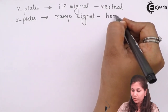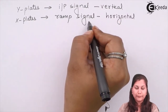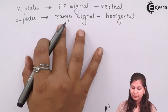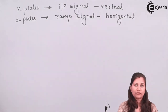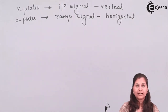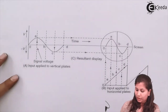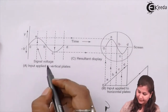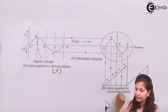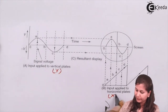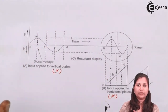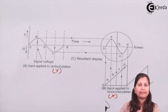Consider an example where the input signal applied to the Y plates is a sinusoidal signal and a ramp signal is applied to the X plates, with the frequencies of these two signals being different from each other. In graph A we are showing the input applied to the vertical plates (Y plates), and in graph B we are showing the input applied to the horizontal plates (X plates). Both signals are applied simultaneously, so the electron beam will be deflected in both the horizontal and vertical directions.